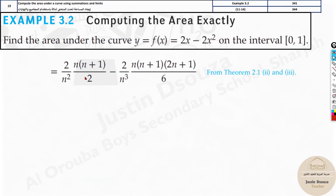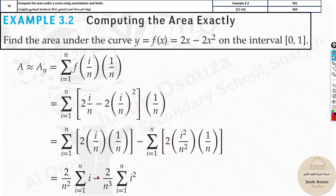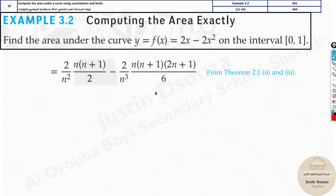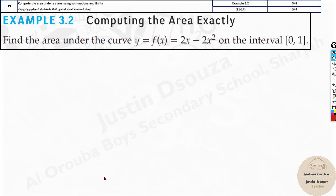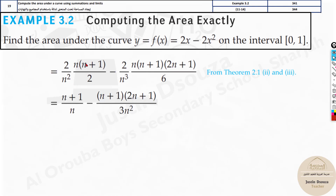I hope you remember the formulas. For summation of i it's n(n+1)/2, and for summation of i squared it's n(n+1)(2n+1)/6. These are the constant values remaining and then you simplify this expression.